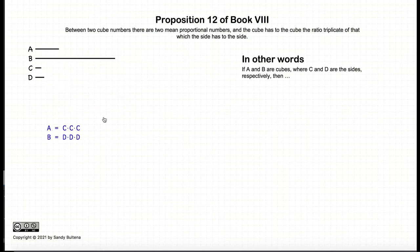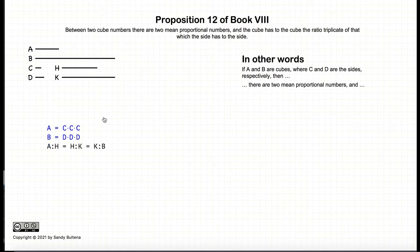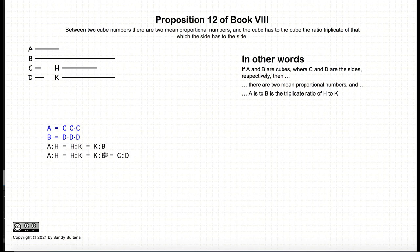So what is this proposition? This proposition states that if we have two cubed numbers where the sides are equal to c and d respectively, then there are two mean proportional numbers. And that means that we have numbers h and k such that a is to h as h is to k as k is to b. And that a to b is the triplicate ratio of c to d.